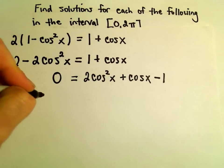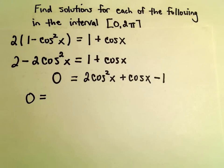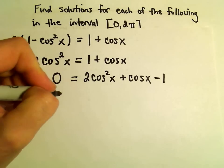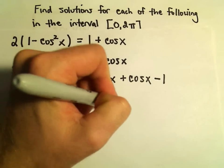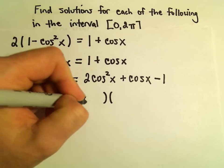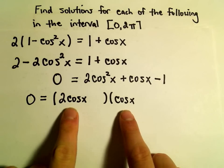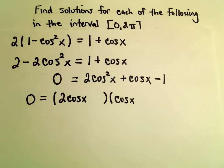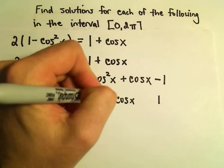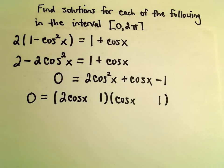And now, hopefully, the right side factors without too much trouble. I think if we use 2cos x and cos x, that's certainly going to give us our 2cos²x. To get a -1, I know I've got to use a positive 1 and a negative 1.